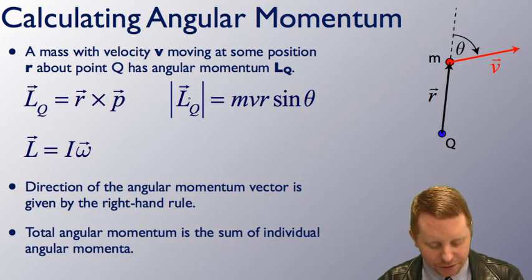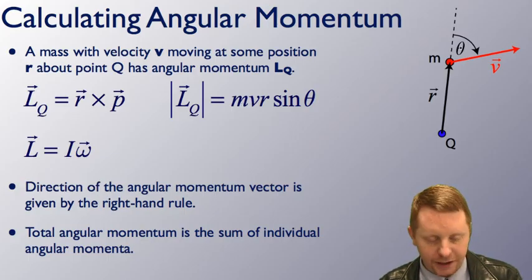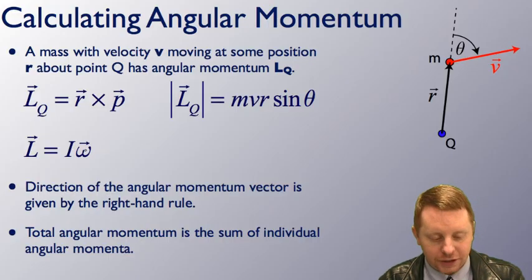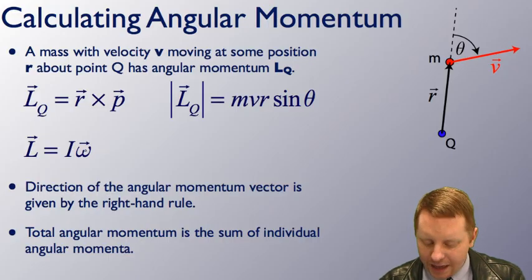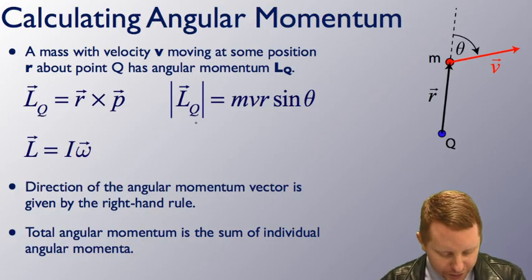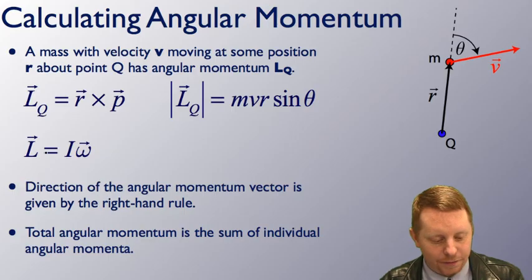In order to find its magnitude, that's just going to be mvr times the sine of the angle theta. We can also calculate it as moment of inertia times angular velocity. I'd like to take just a second to show you how we go from this formula to that formula.